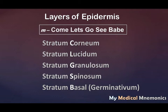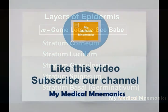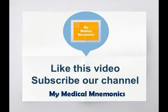So: Come = corneum, Let's = lucidum, Go = granulosum, See = spinosum, Babe = basale. This simple mnemonic 'Come Let's Go See Babe' is going to help you remember the names of the five layers of the epidermis. Thank you so much for watching this video — for more mnemonics, subscribe to this channel.